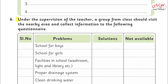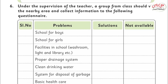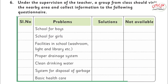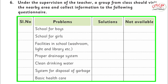Question number six: under the supervision of the teacher, a group-formed class should visit the nearby area and collect information using the following questionnaire — school for boys, school for girls. You have to visit your nearby area and see what problems are there and what their solutions are, and what facilities are available.